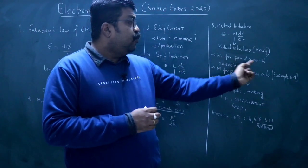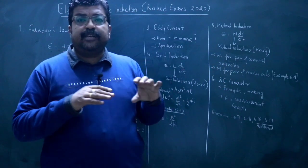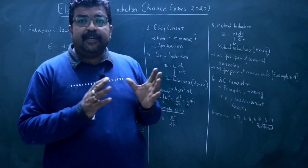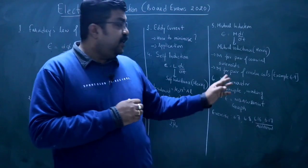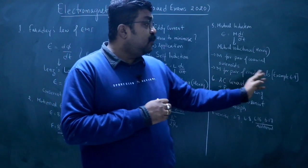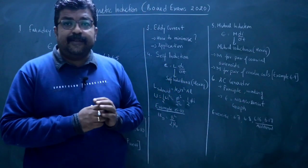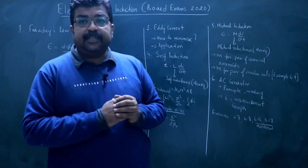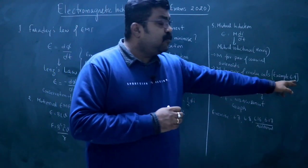M is for pair of coaxial solenoids. If there is another solenoid in one solenoid, then how can we calculate the mutual inductance? Then the next one is mutual inductance for a pair of circular coils. If there are two circular coils, then how much is mutual inductance? So this is the example of 6.9.